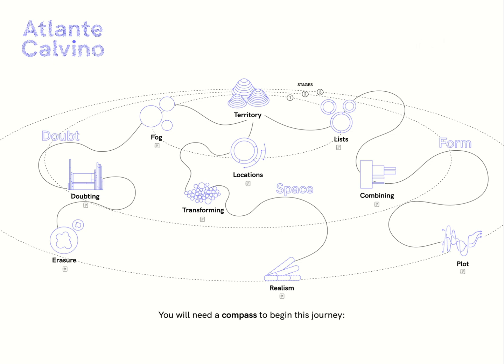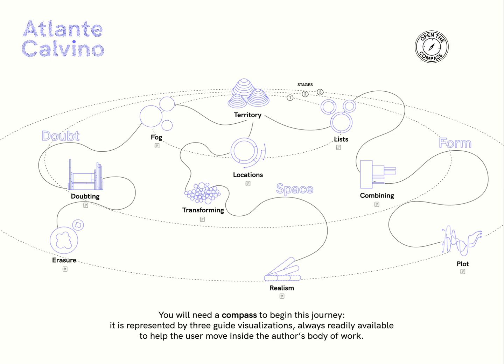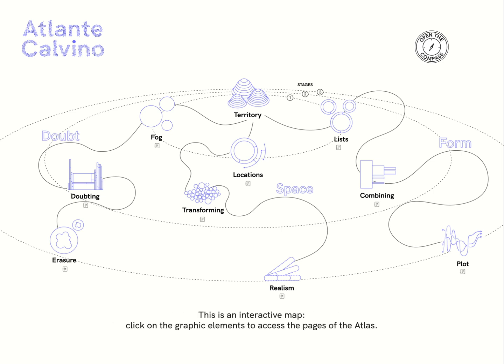You will need a compass to begin this journey. It is represented by three guide visualizations, always readily available to help the user move inside the author's body of work. This is an interactive map. Click on the graphic elements to access the pages of the Atlas.